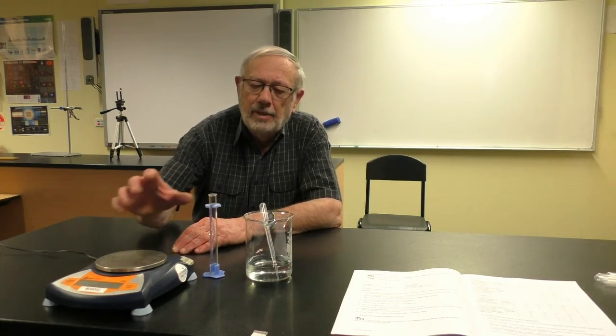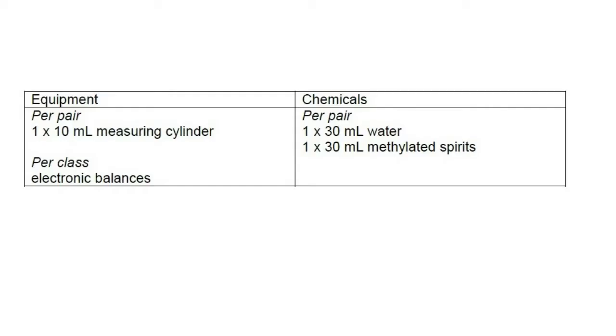We have first of all a weighing machine. Secondly, we've got a measuring cylinder and that cylinder is a 10 milliliter cylinder. And I've got a supply here of water. So what we're going to do now is follow the method.